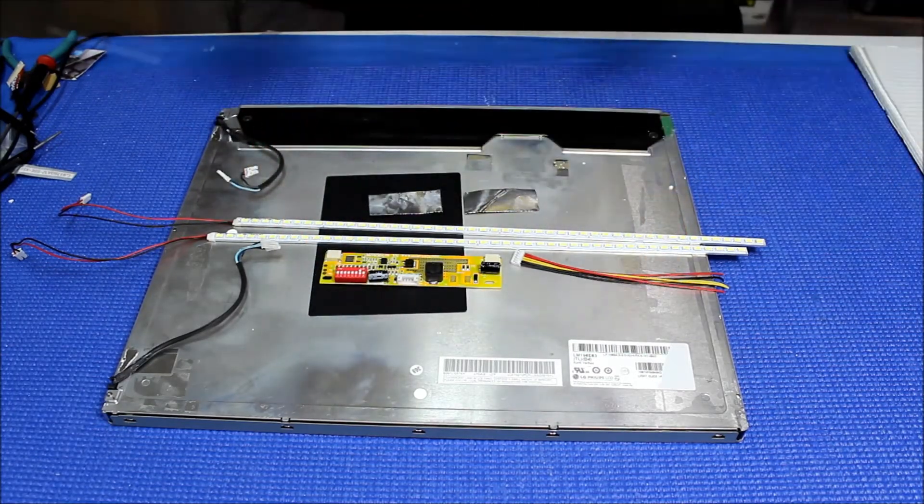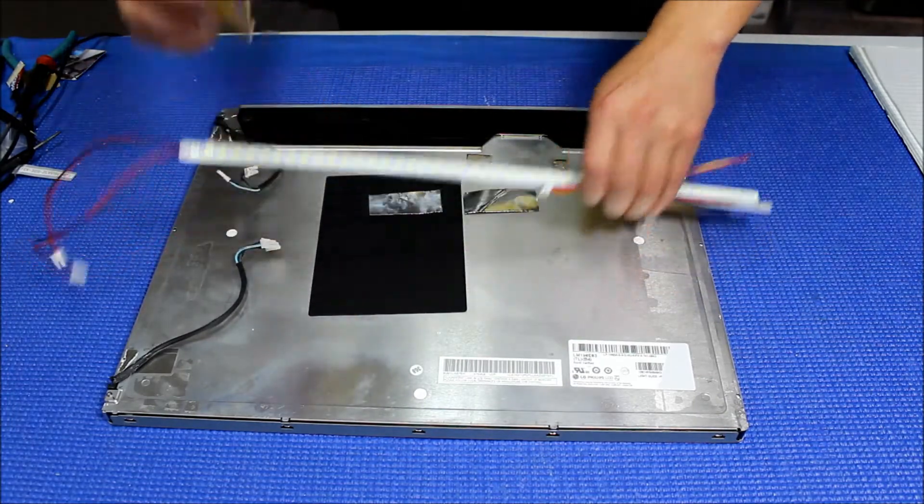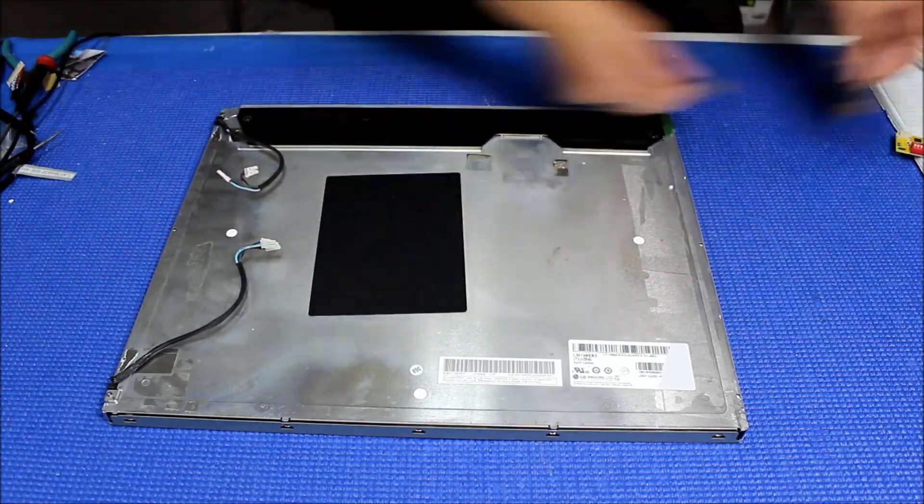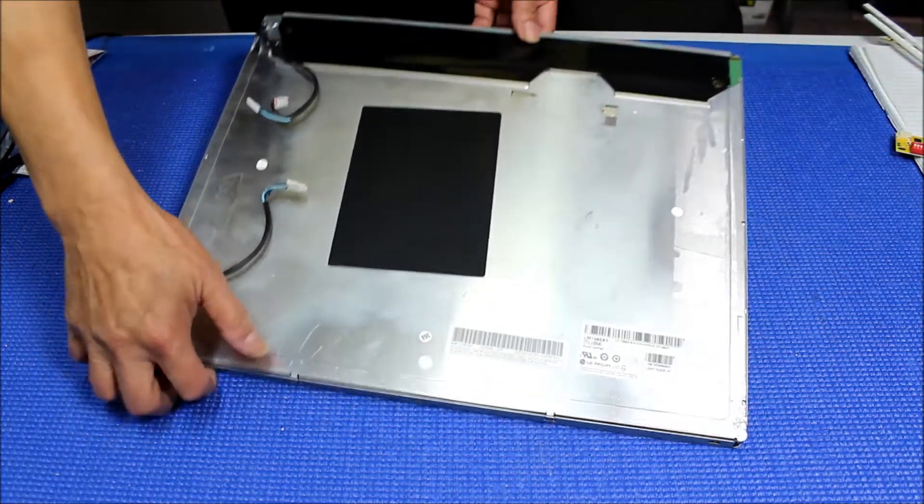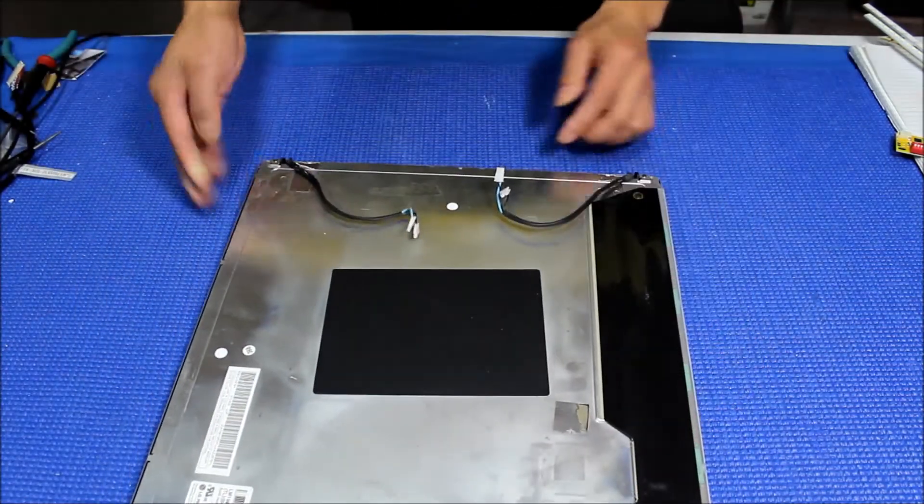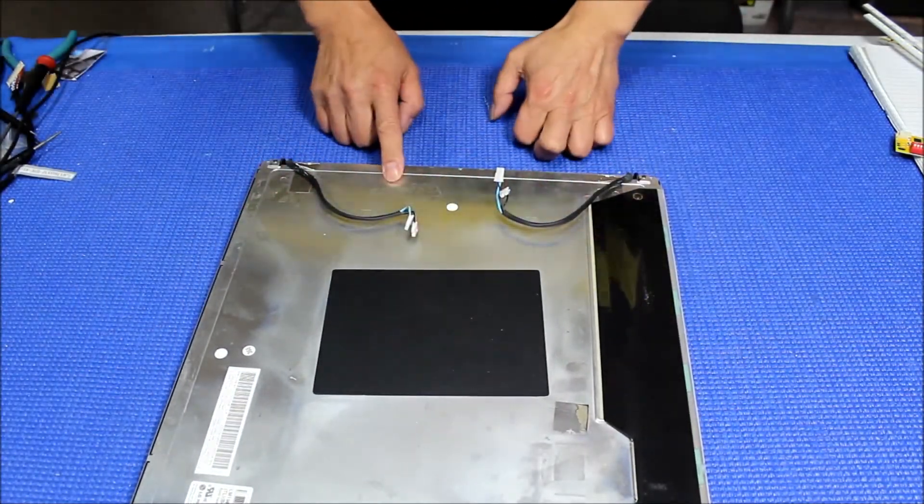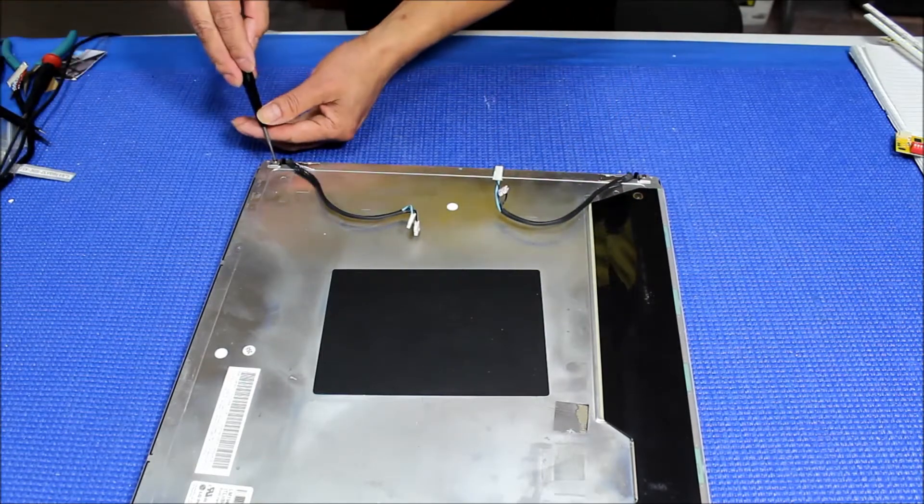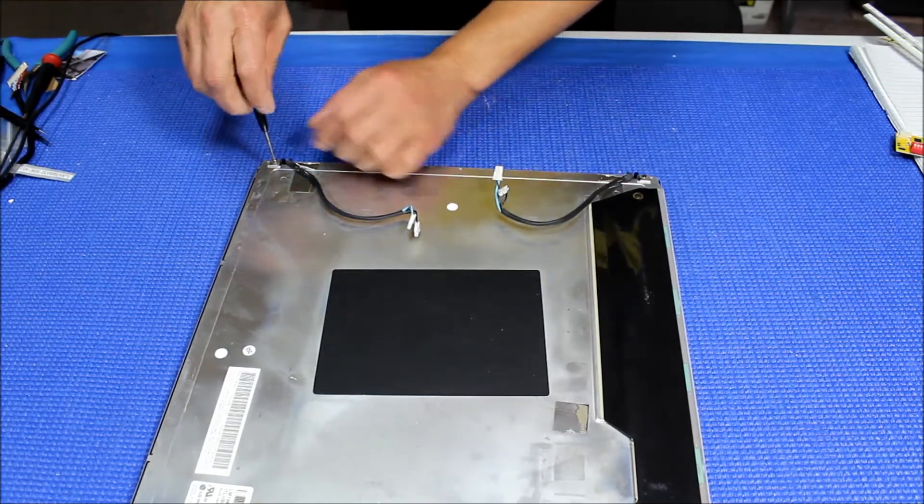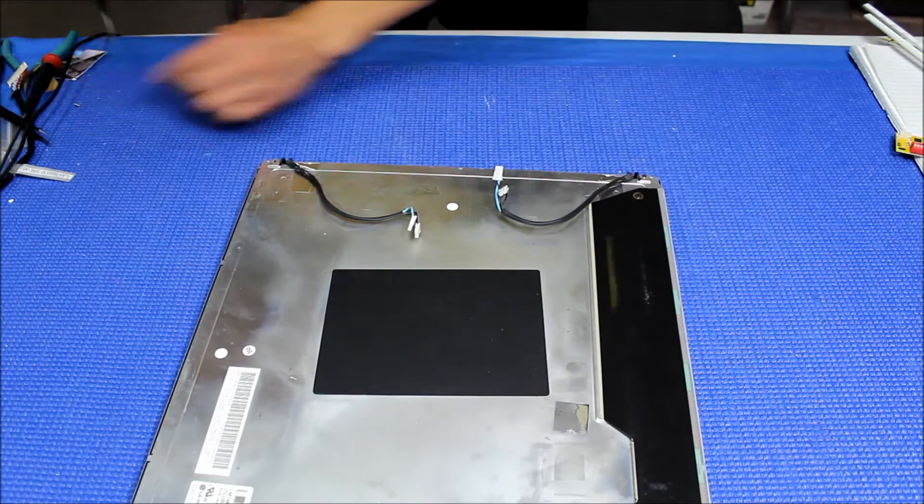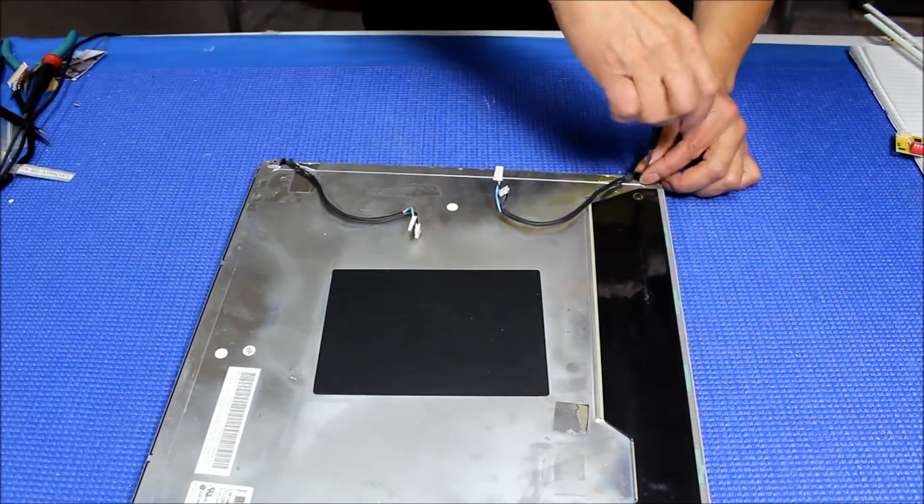Let's set aside the LED kit for a second. This screen is actually pretty easy because this tool screw is holding both CCFL reflectors. Basically, we remove this screw and then we just pull out.